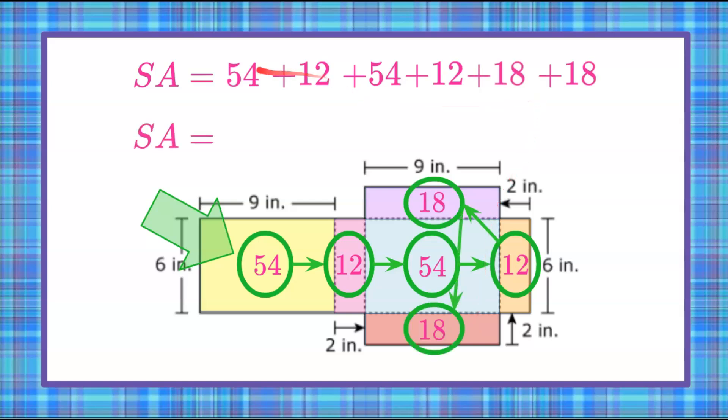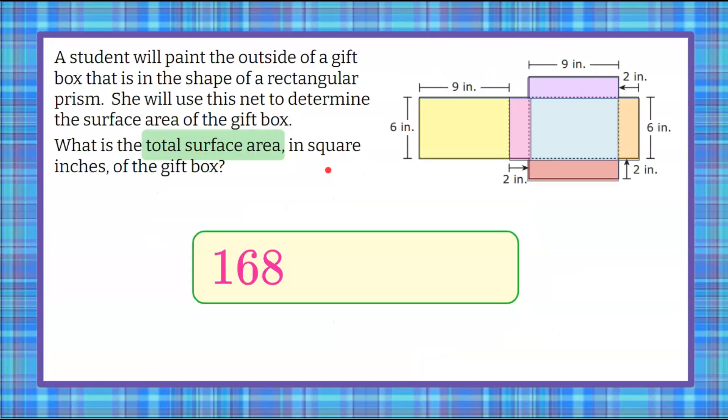So we have 1, 2, 3, 4, 5, 6 areas for our six faces. When we add these all up, we get a sum of 168. So let's bring that over here.